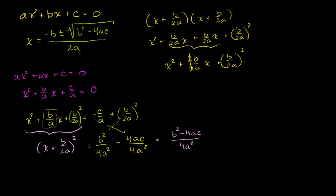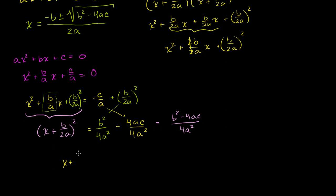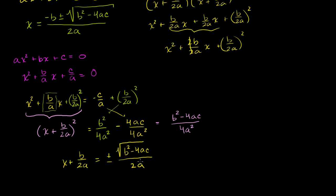So let's take the square root of both sides. The left hand side will just become x plus b over 2a, and that is going to be equal to the plus or minus square root of b squared minus 4ac over the square root of 4a squared. Now what is the square root of 4a squared? It is 2a, because 2a squared is 4a squared.